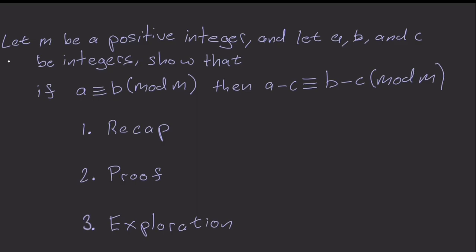In this discrete mathematics video, we will prove the following theorem. Let m be a positive integer and let a, b, and c be integers. Show that if a is congruent to b modulo m, then a minus c is congruent to b minus c modulo m.